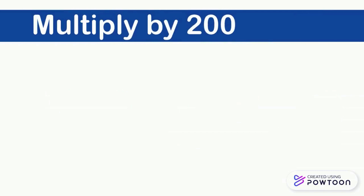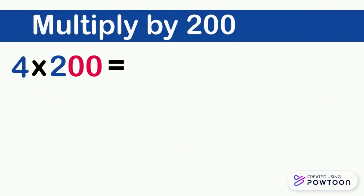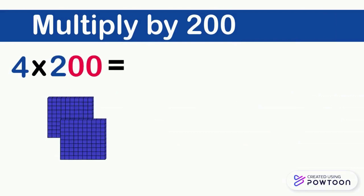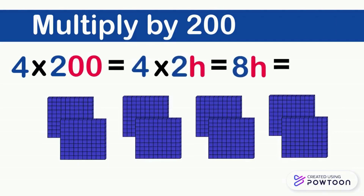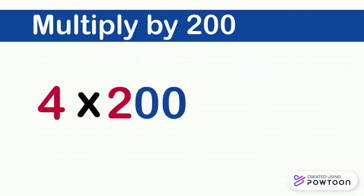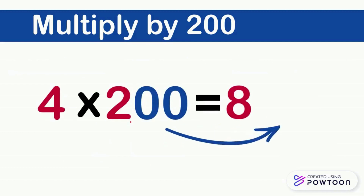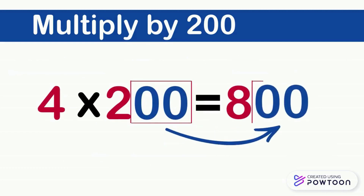Now multiply 4 by 200. The number 200 is equal to 2 blocks of 100. So 4 times 2 blocks of 100 equals 8 blocks of 100, which is equal to 800. So 4 times 200 equals 800. Notice that to multiply a number by 200, we multiply the number by 2, then we put two 0s to the right of this number.